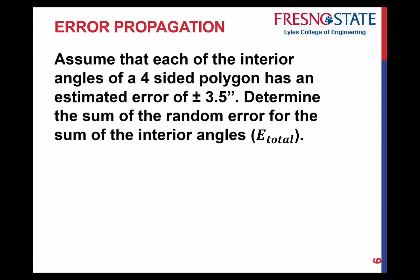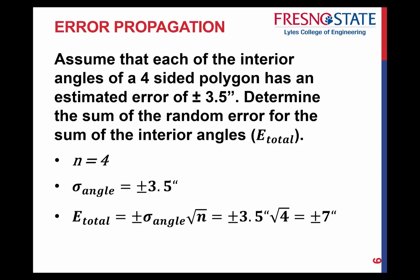Here's another example. Assume that each of the interior angles of a four-sided polygon has an estimated error of 3.5 seconds. We want to determine the total random error for the sum of the interior angles. Four-sided means N is equal to 4 — we measured four angles. The standard deviation of each angle is plus or minus 3.5 seconds. Since every angle has the same standard deviation, we use the formula for error of a series. Taking 3.5 seconds times the square root of 4 gives plus or minus 7 seconds as the total error.